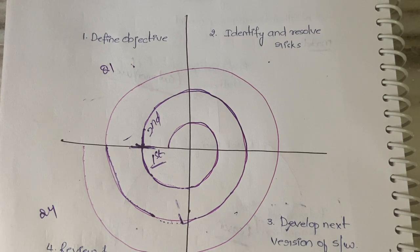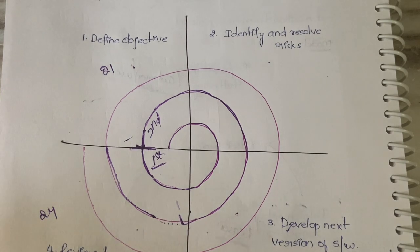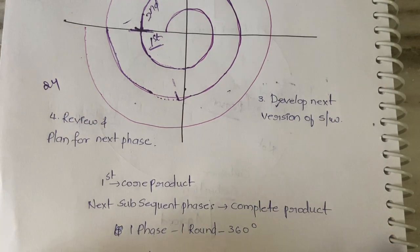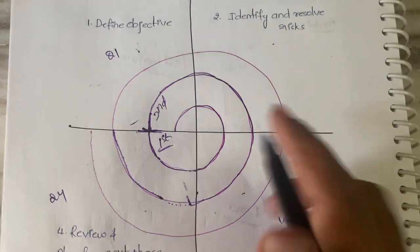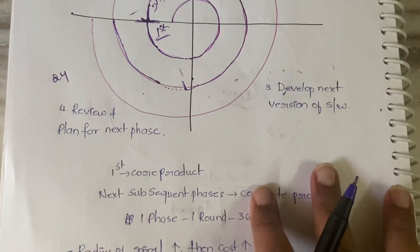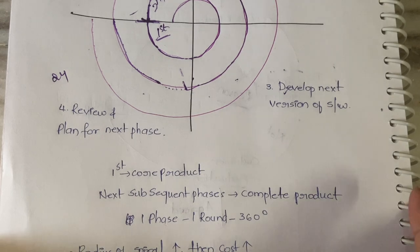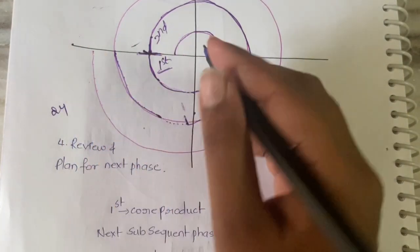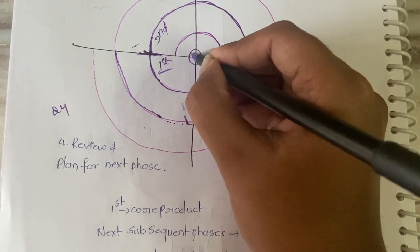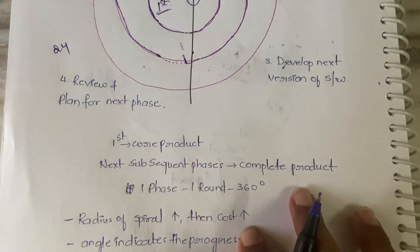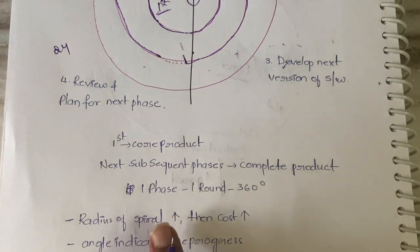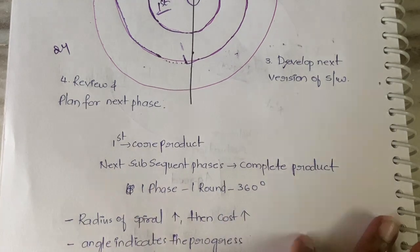We have four steps here. Let me tell you some more features of this spiral model first. The first iteration is the core product, and in the next subsequent iterations you will be getting the final complete software. Subsequent phases - phase is nothing but one round. One round is one phase, a complete 360 degrees.